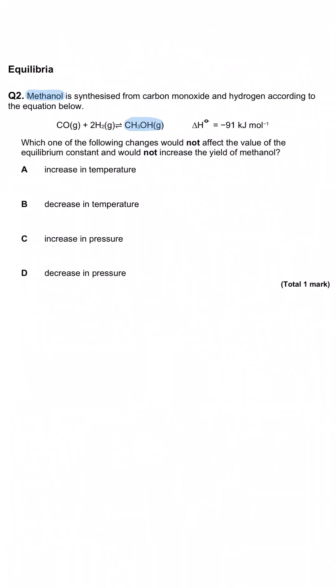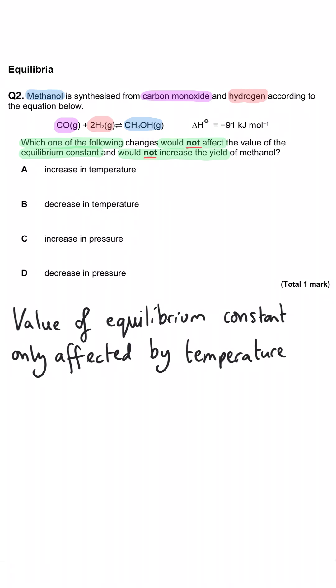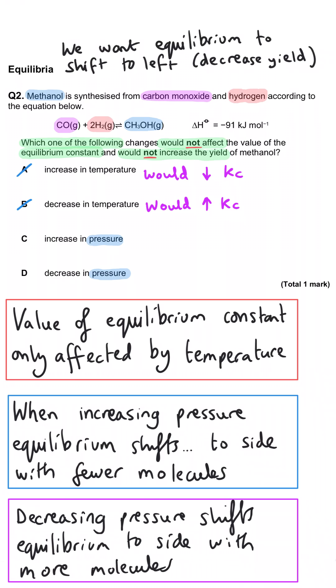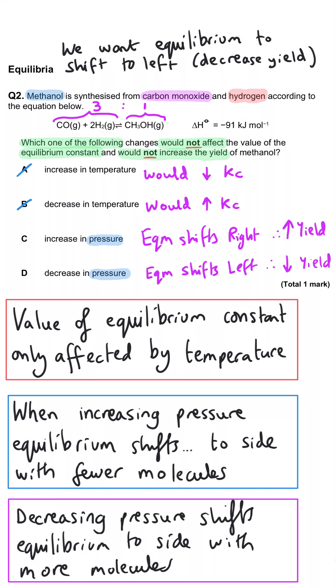Methanol is synthesized from carbon monoxide and hydrogen according to the equation below. Which one of the following changes would not affect the value of the equilibrium constant and would not increase the yield of methanol? The equilibrium constant is only affected by temperature, so we can rule out A and B immediately. The other two changes are changes in pressure. There are three molecules on the left and only one on the right, so decreasing the pressure shifts equilibrium left, not increasing the yield. So D is correct — an increase in pressure would increase the yield, and a decrease in pressure decreases the yield.